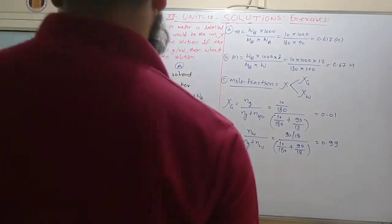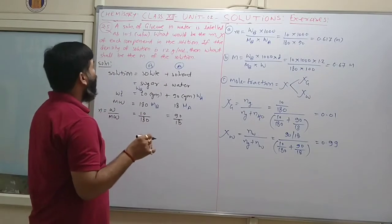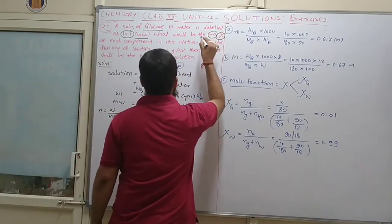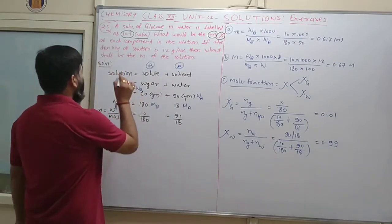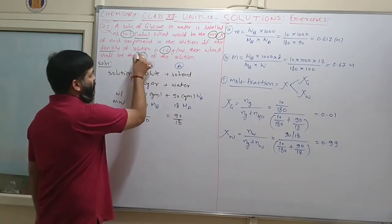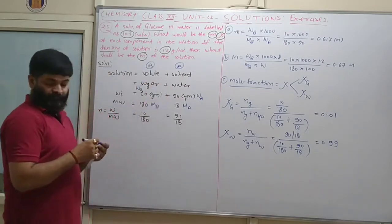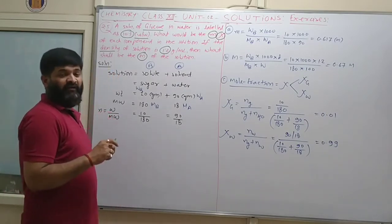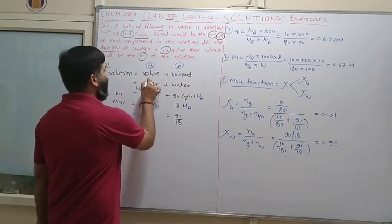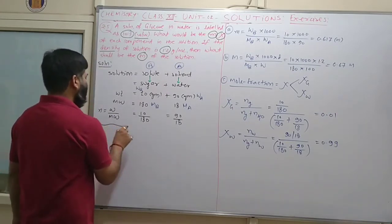Question 2.5: A solution of glucose in water is labelled 10% weight by weight. What would be the molality and mole fraction of each component if the density of solution is 1.2 g/ml? Here solute is glucose (sugar) and solvent is water.